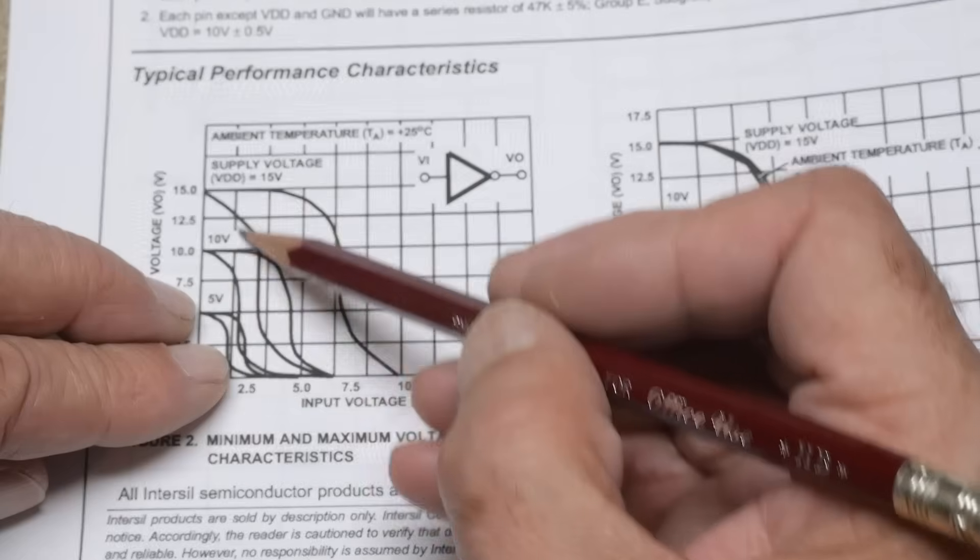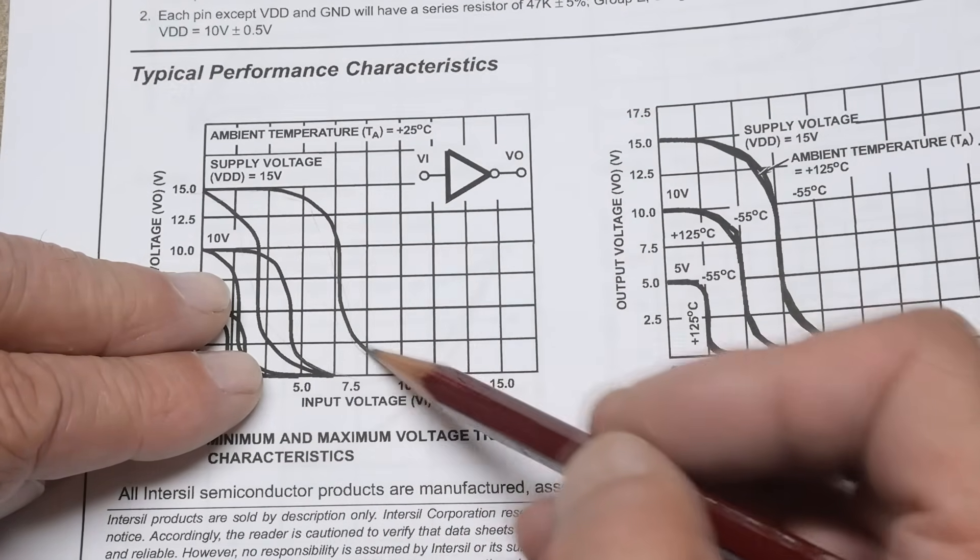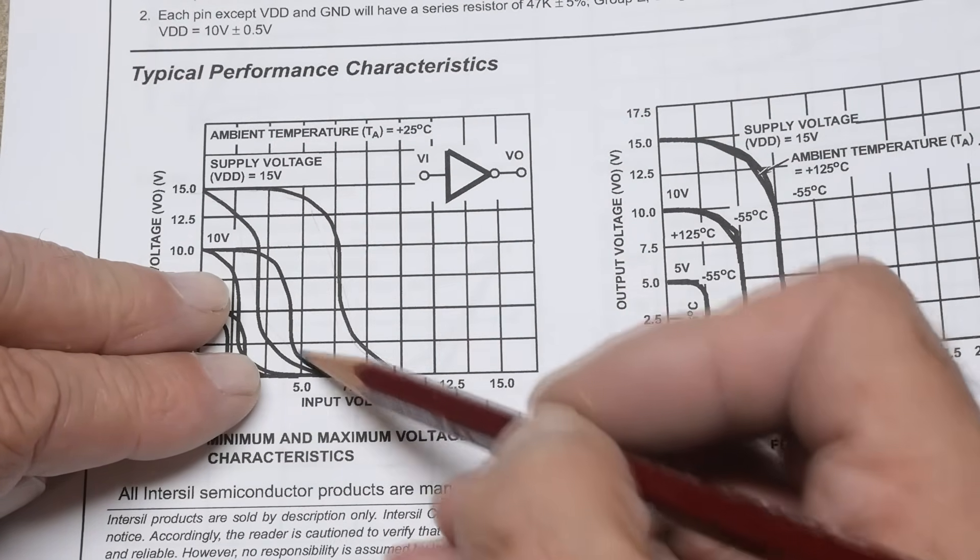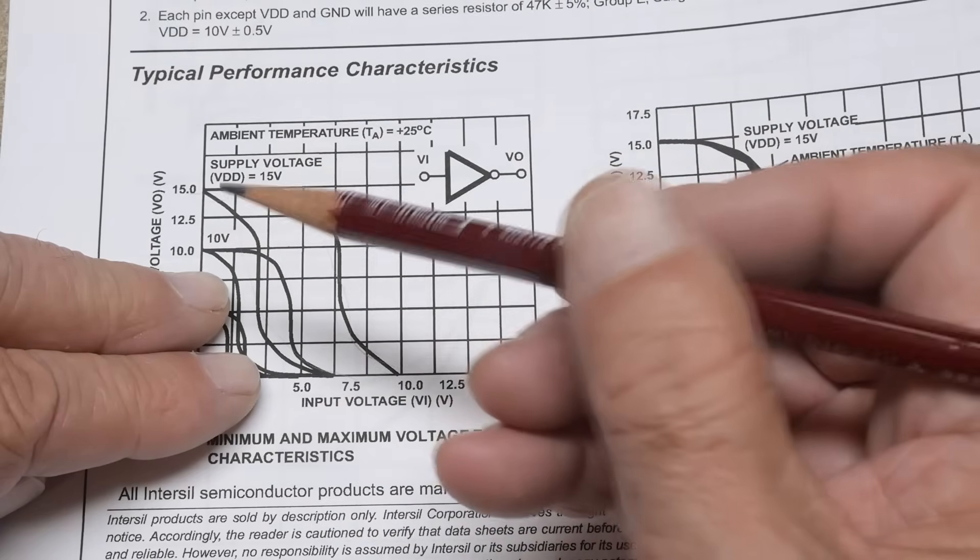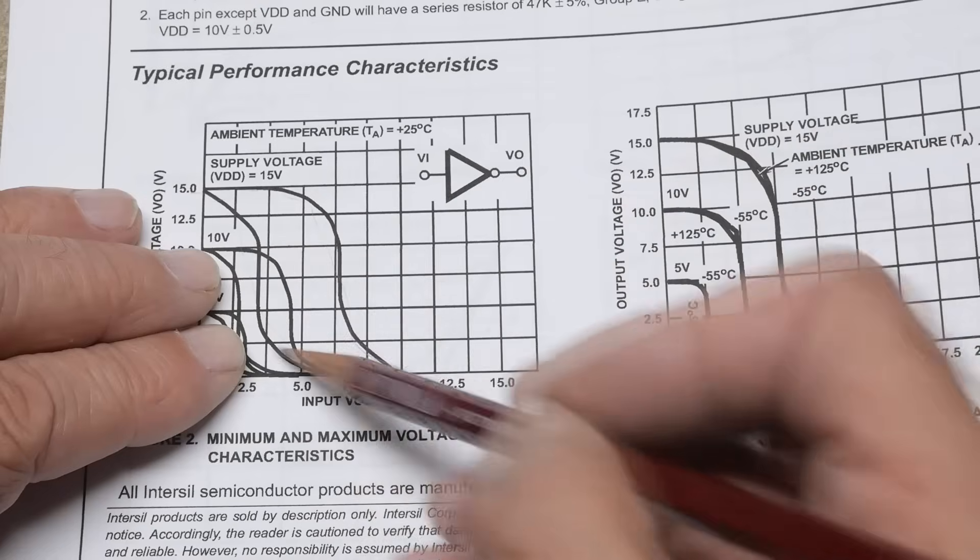Here's a line and here's a line. So there's some hysteresis. So if you go this direction, you might follow this path. And if you go the reverse direction, you might follow that path, or I'm sorry, this path and this path.